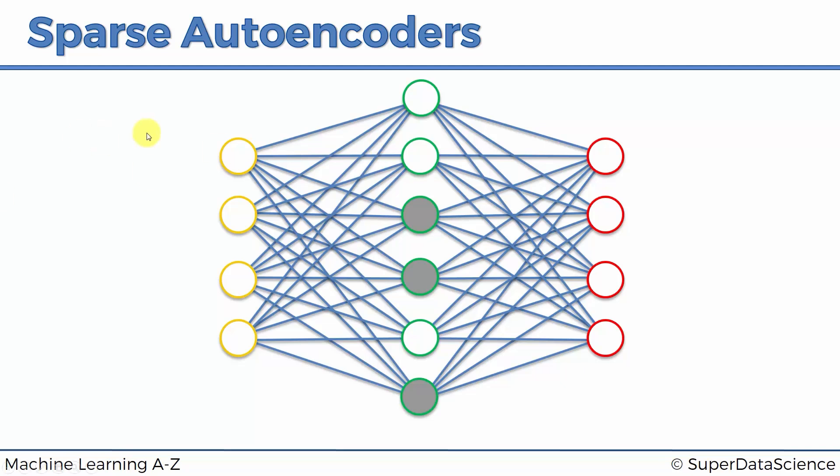And that's what a sparse autoencoder is. So whenever you hear sparse autoencoders, just remember that it's this kind of thing. And in reality when you think about it, it is still compressing the information but just every time it's using different nodes.